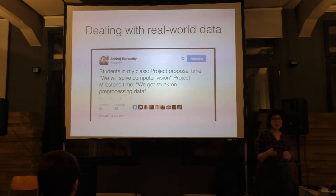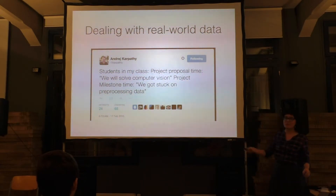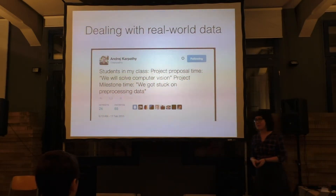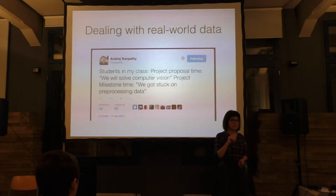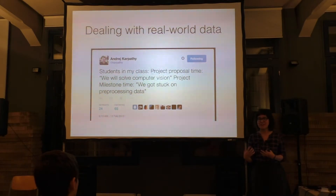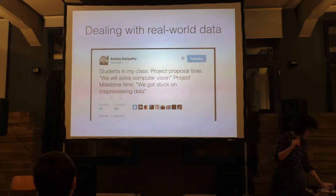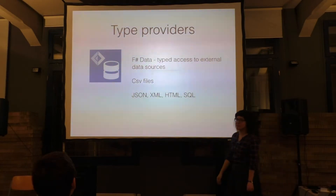I guess you are all dealing with real world data. There's a quote where students say at the start they will solve computer vision, but when they are supposed to present results they say they got stuck pre-processing data. When you get data from biological papers, it's very demanding to go through and explore to find out what's actually in there. So I will show you another part of F-sharp called type providers, which basically give typed access to all sorts of things — primarily CSV files and JSON files for me.